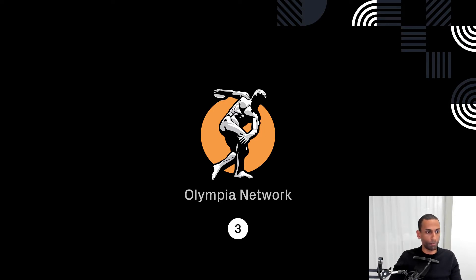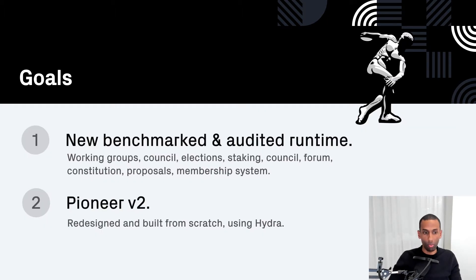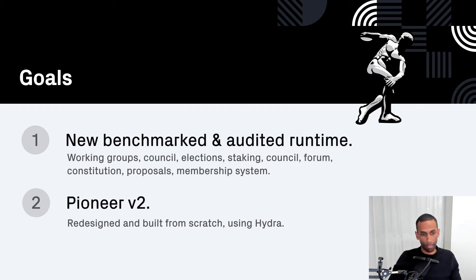So what's going on in this release? We are doing two things. One is that we're shipping a new, updated, simplified, benchmarked, and audited runtime, which sees major improvements across the board and new functionality and features for every subsystem. And then it's the introduction of Pioneer version 2. Pioneer, for those who don't know, is the governance app where you vote and stake and buy memberships and run for elections, the council, forum, and so on — all the stuff to do with participating in the system. Pioneer 2 is the user-facing application for doing that through a user interface.